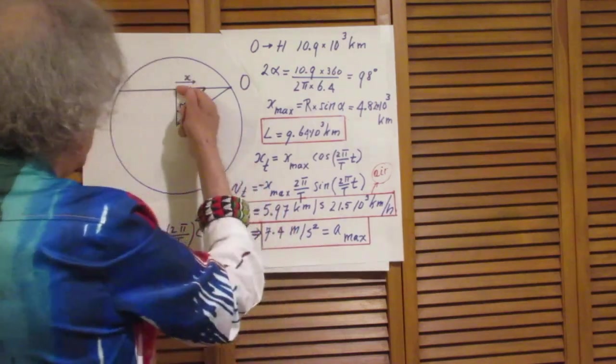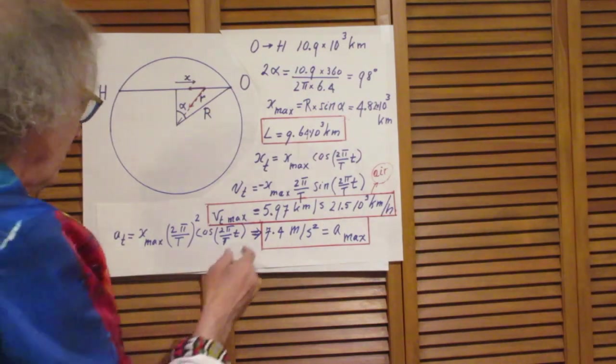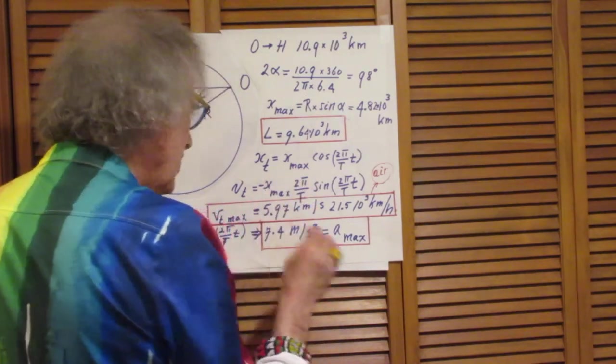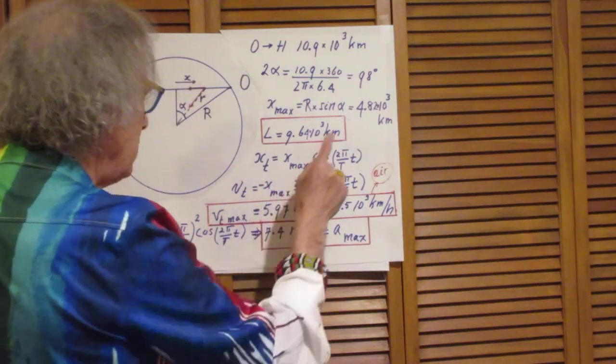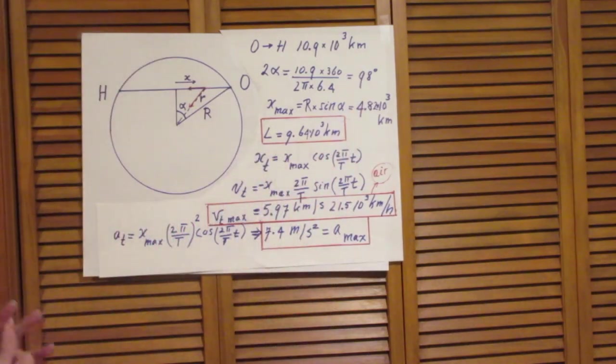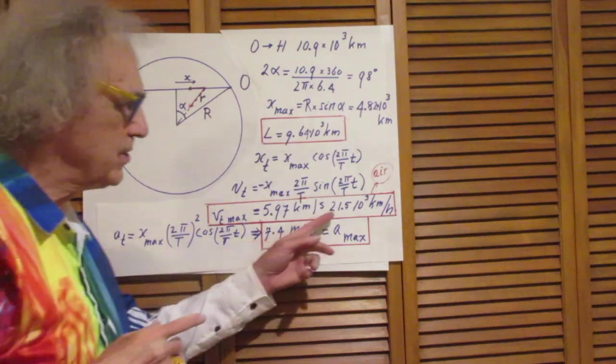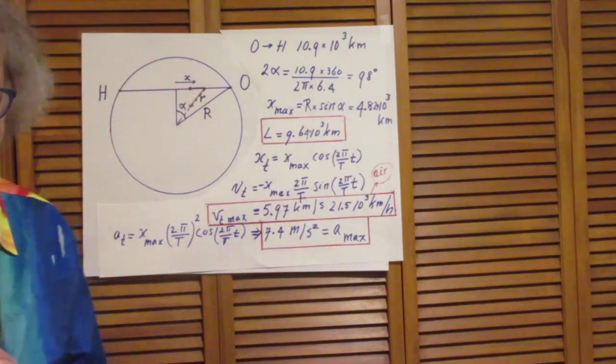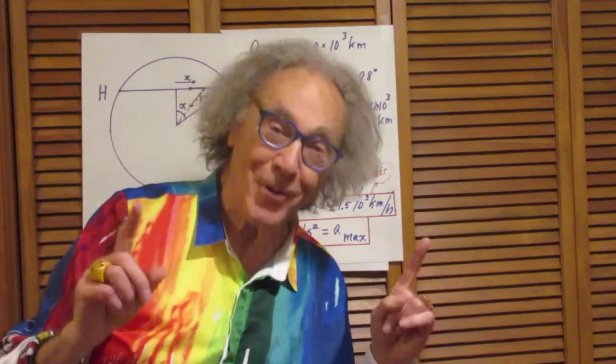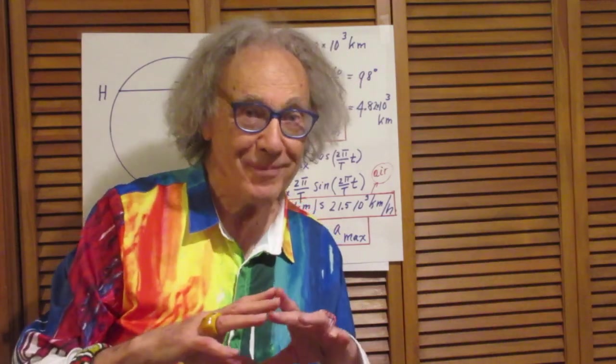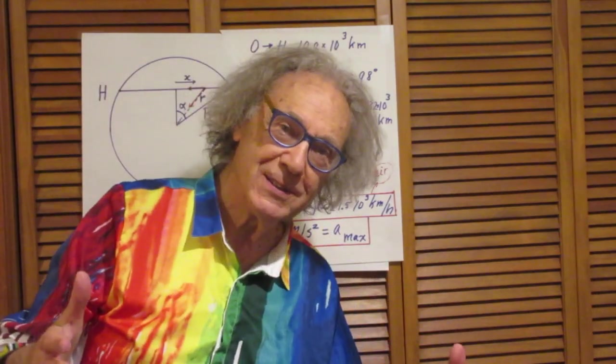The minus sign simply means it is in this direction. Physics is sign sensitive. So the maximum speed is x maximum times 2π divided by the period, and that's close to 6 kilometers per second, which is a little more than 21,000 kilometers per hour. That should tell you the assumption of no air drag is totally absurd, unless you evacuated the tunnel. But you could still have one atmosphere pressure in your vehicle.